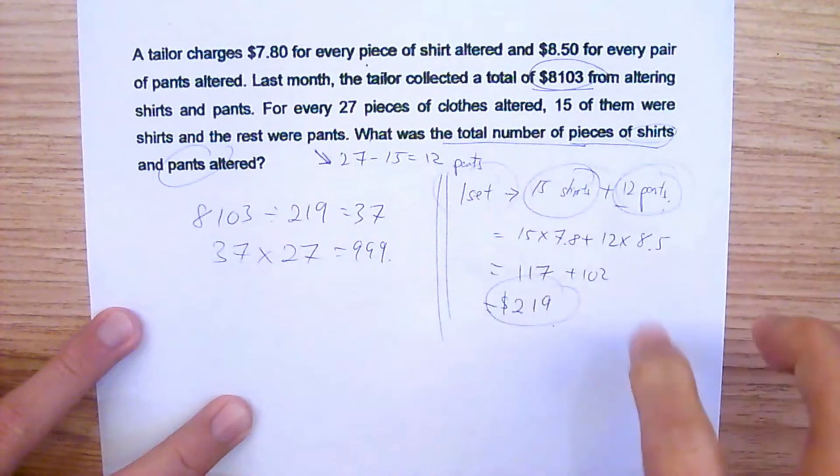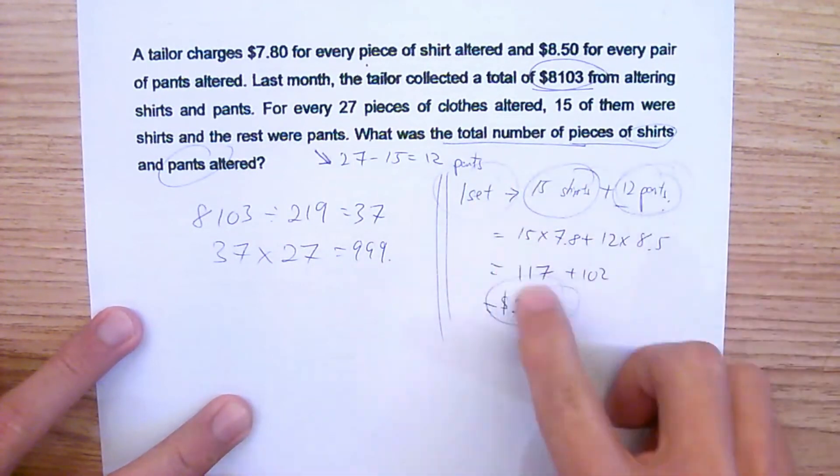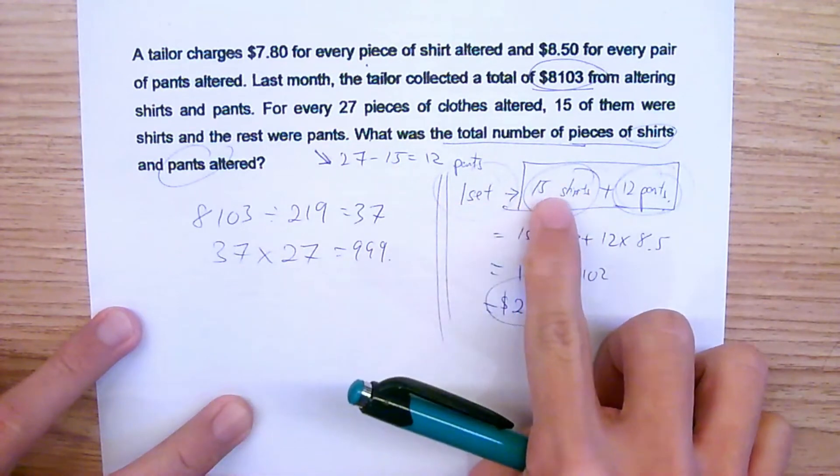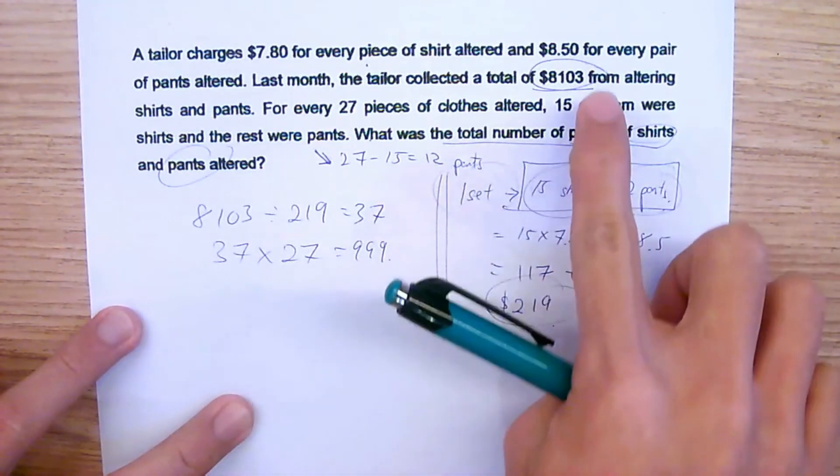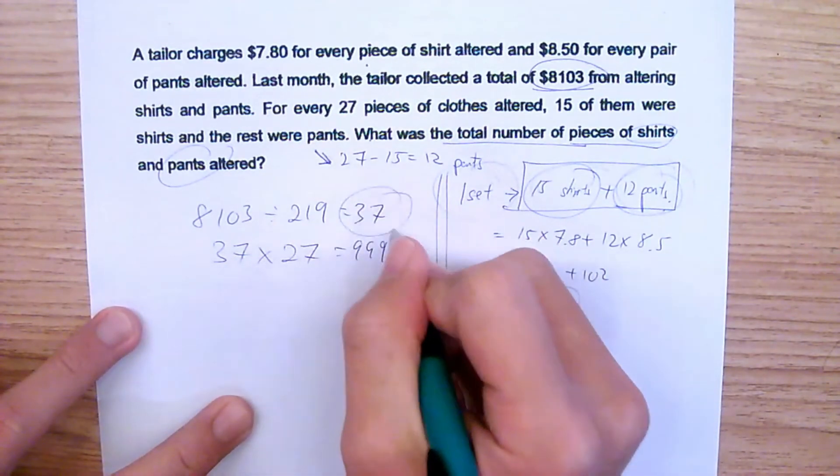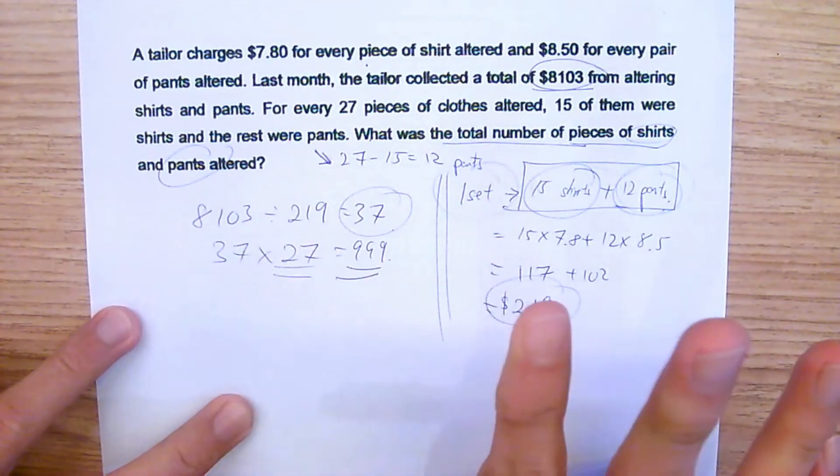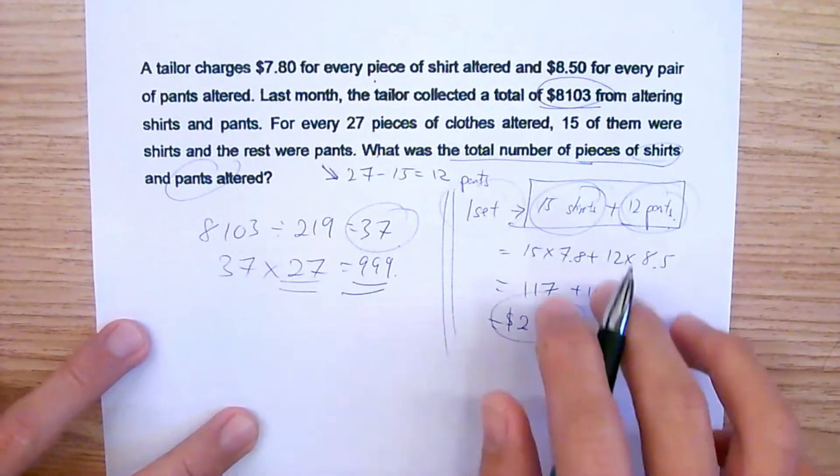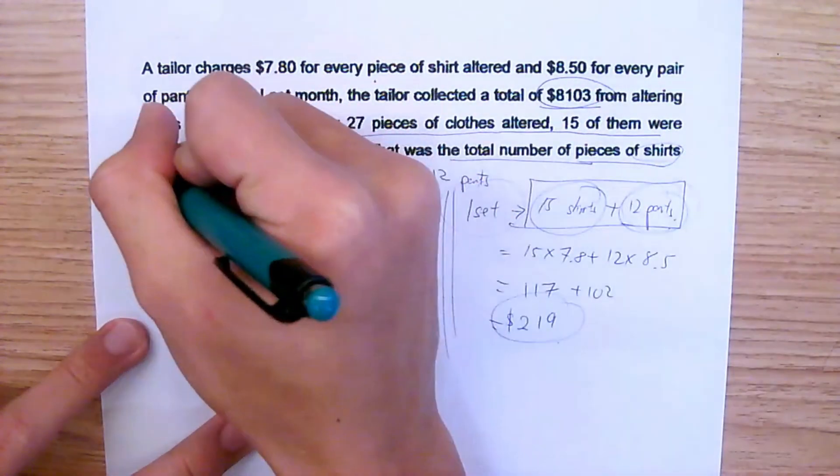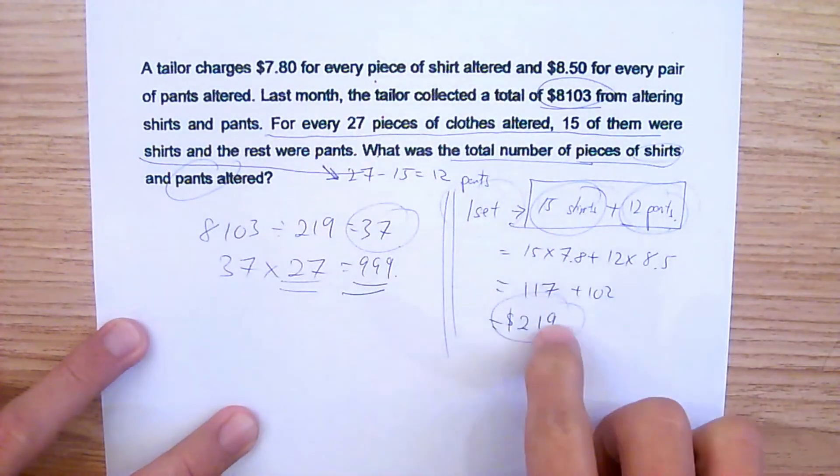So use this set method. For parents who are watching this, this set method is very useful. For this set, it's like a ratio—for every one set, it's 15 to 12. So you find one set first. Then you find the total divided by the price of one set, and then you get a number of sets. And number of sets multiplied by number of clothes, you're going to get the answer. This will be very useful for a lot of students who are facing issues like that. The moment you see this kind of sentence, use the set method.